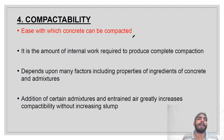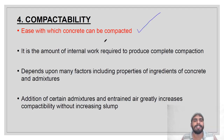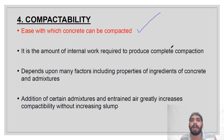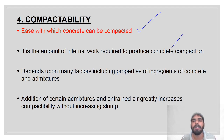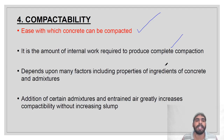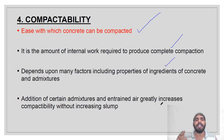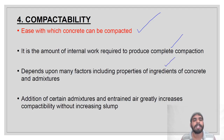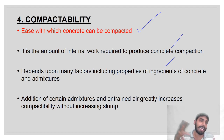The next property is compactability — the ease with which concrete can be compacted. Compactability is the amount of internal work required to produce complete, full compaction. It depends on many factors including the properties of ingredients and admixtures. Addition of certain admixtures and entrained air greatly increases compactability without increasing slump.